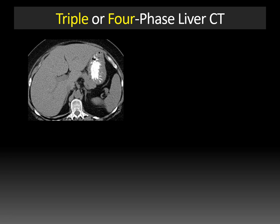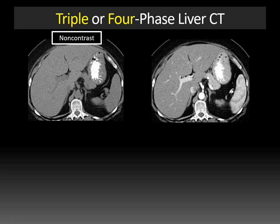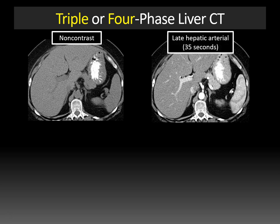A typical multi-phase liver CT protocol usually has three or four phases. Starting with the non-contrast phase, you can see there's no contrast within the aorta. After we give contrast, the first phase we should see is the late hepatic arterial phase, which occurs about 35 seconds after contrast injection. During this phase, you'll see the hepatic artery enhancing and the portal vein should be homogeneously enhancing.